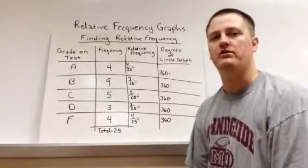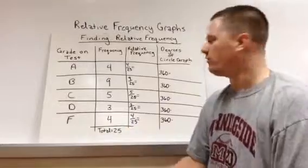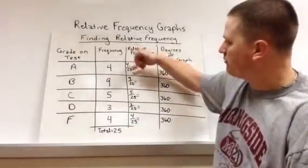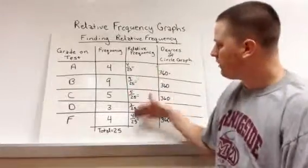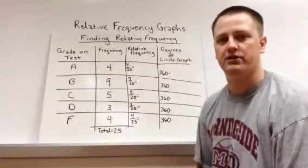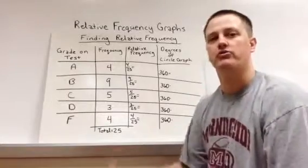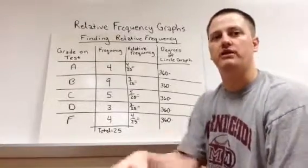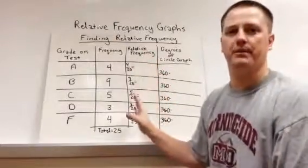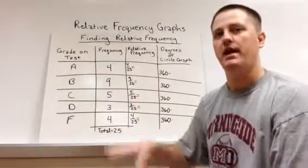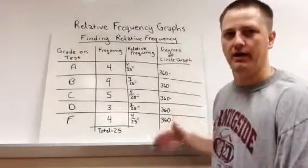Relative frequency starts with a fraction, a comparison of the frequency to the total. So here I have 4 over 25, 9 over 25, and so on. What we want to do is use the fraction to create a decimal, and then use the decimal to create a percent. The percent is what we'll typically use for relative frequency. The decimal we'll use to find the degrees of the circle.